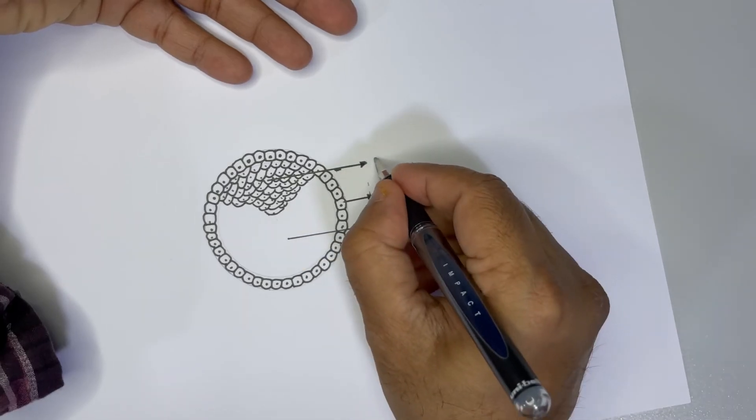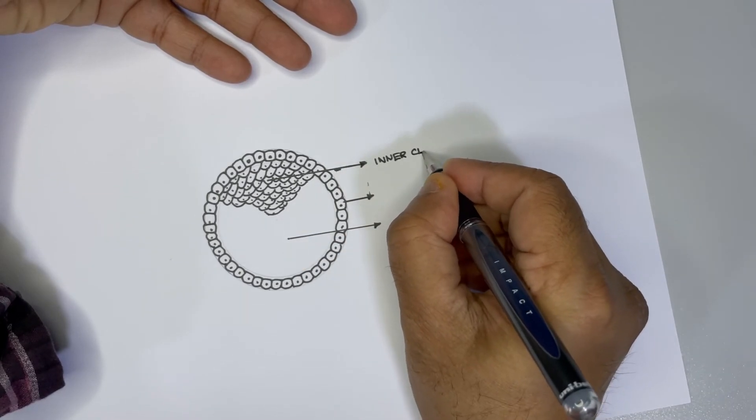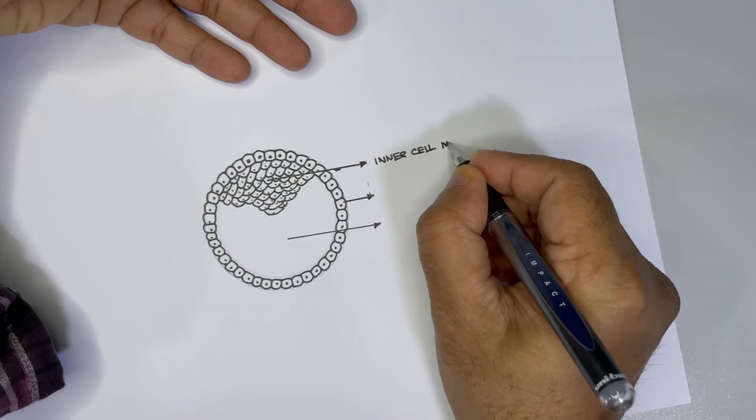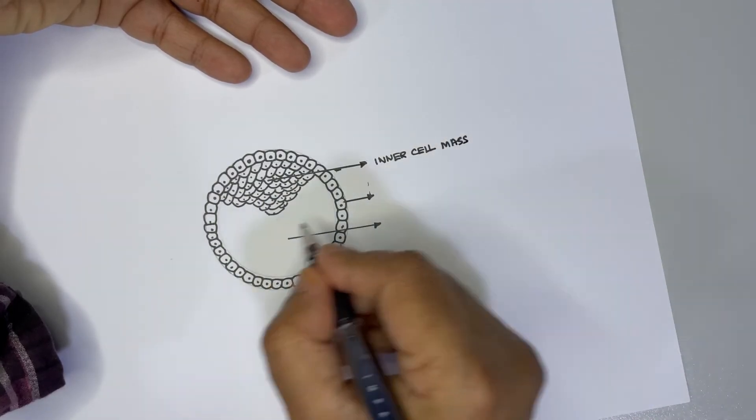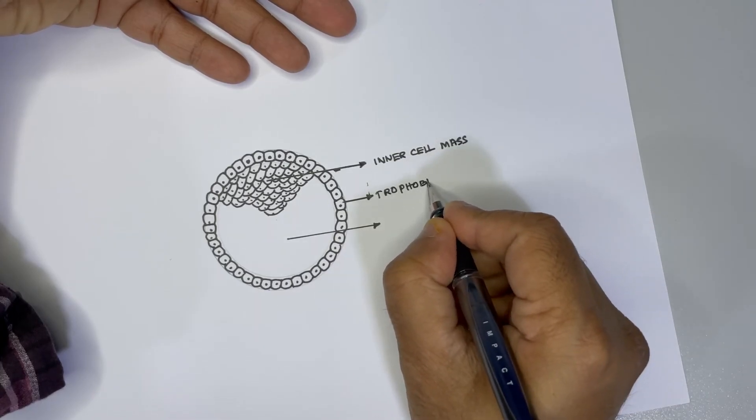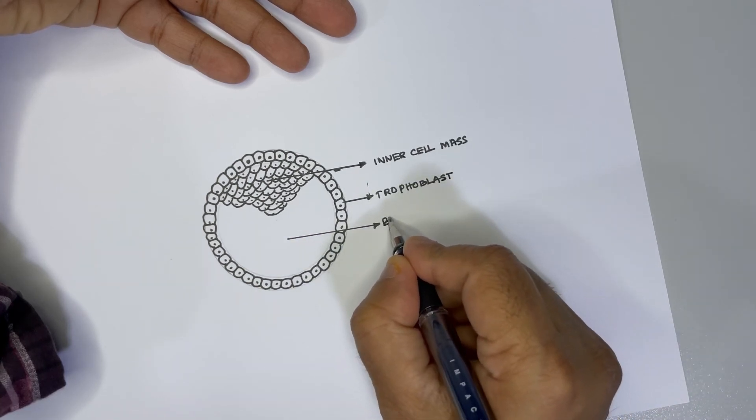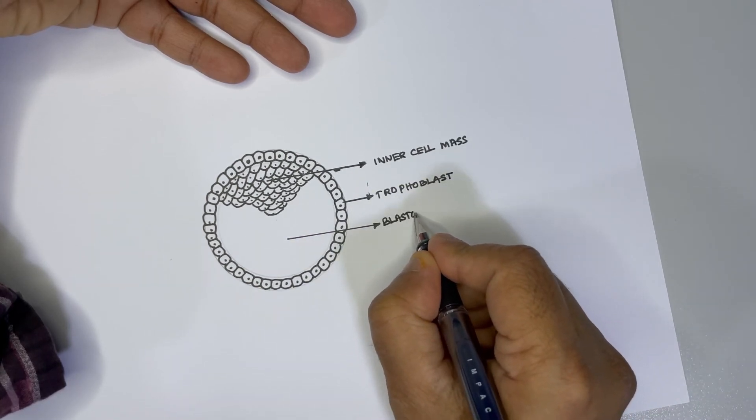So this is called inner cell mass, this is trophoblast, and this is blastocoel.